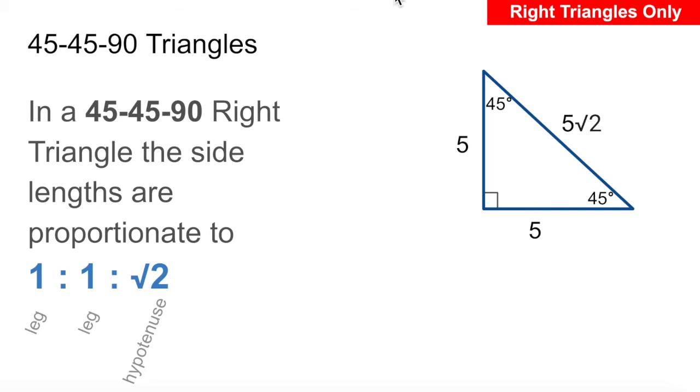So let's look at an example of one right here. We have a 45 degree angle, a 45 degree angle, and a 90 degree angle, so that we know that if one side is 5, then the other short side is also going to be 5, and the hypotenuse is going to be root 2 times longer than 5, in other words, 5 root 2.